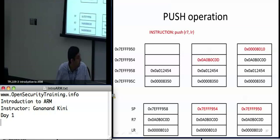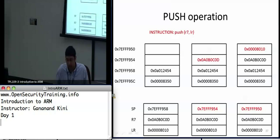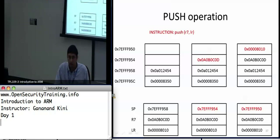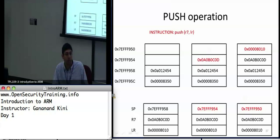So R7 gets put into 7EFFF954 and the link register, in this case hex 8010, gets put into 7EFFF950. This is just a push operation — the stack grows towards lower memory addresses and is a region in memory where you can store variables and other data.